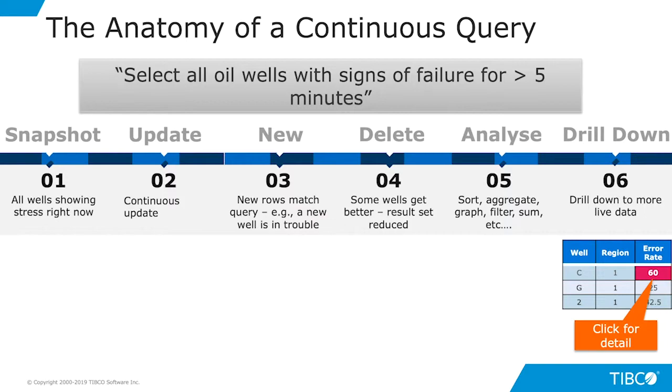That's the magic of the continuous query processing model. You can ask and answer questions not only about what's happening now with a snapshot, but you can see what's happening as time evolves, as momentum changes, as conditions change, as things get better or worse. And that's the key to managing a digital business.